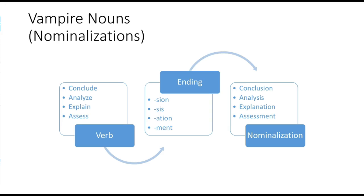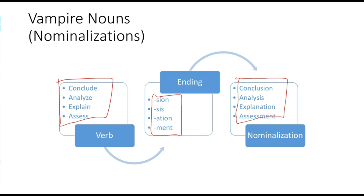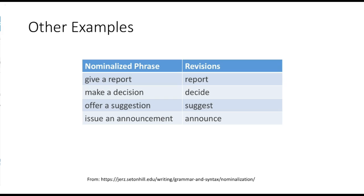Nominalizations are basically when people take verbs like conclude, analyze, explain, assess, add some sort of ending — either I-O-N, I-S, and so on — and make nouns out of them: conclusion, analysis, explanation, assessment. Those are fine words, but when they're used to describe an action, the action hides in the noun. A verb expresses something that someone has done or is doing, rather than the noun version of it.